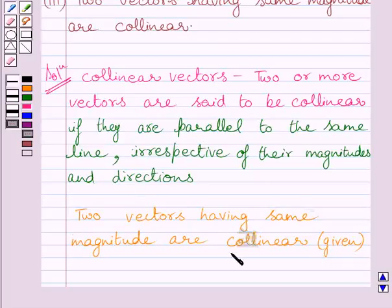Now here in this statement, given two vectors must be parallel to the same line. Only then, they will be collinear. So the statement, two vectors having same magnitude are collinear, is false.